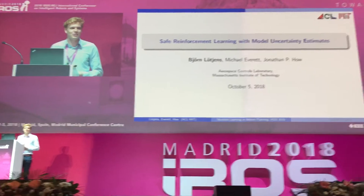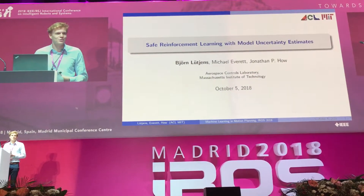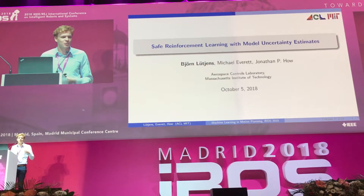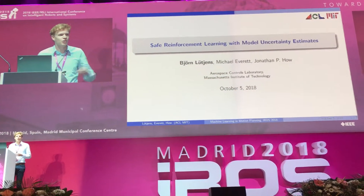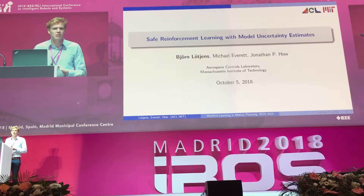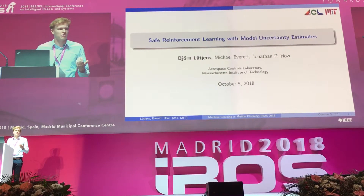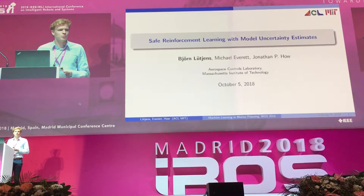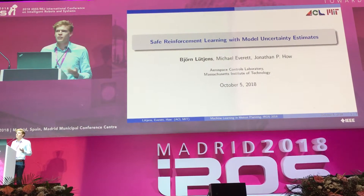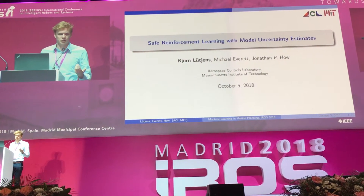My name is Björn Wittkings. I'm going to present the work I've done with Mike Leppert and John Howe at MIT. It's called SAFE Reinforcement Learning with Model Uncertainty Estimates.